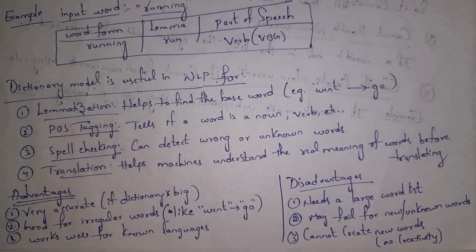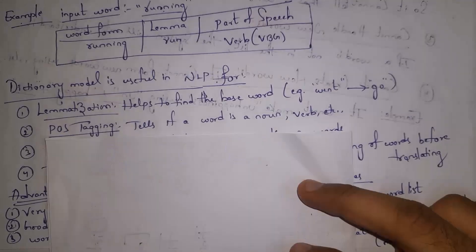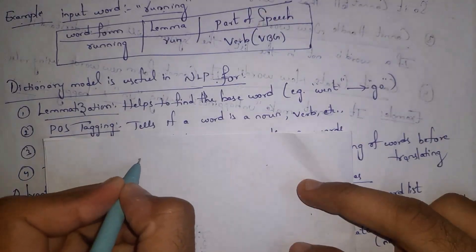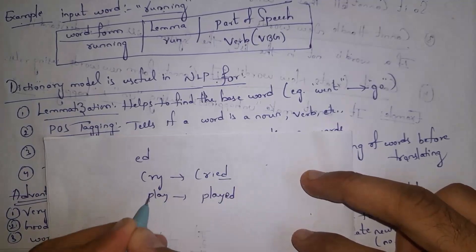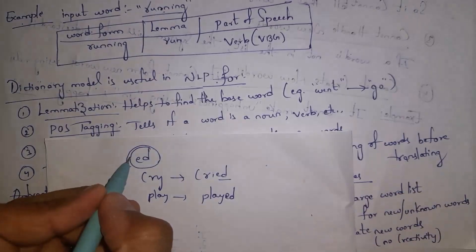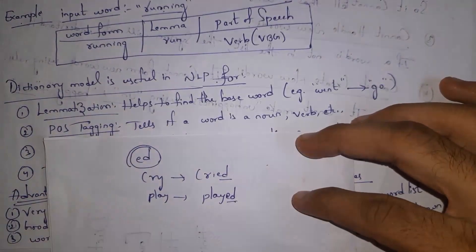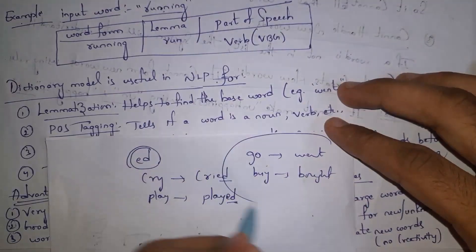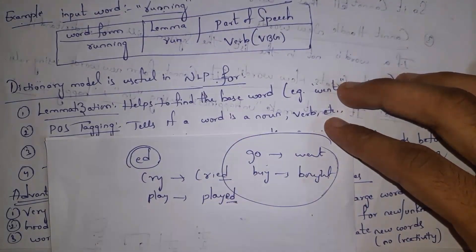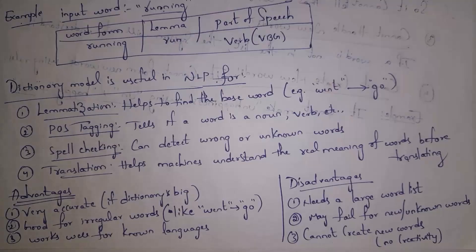The advantages of the dictionary-based morphological model are: first, it is very accurate because the dictionary is very large; second, it is good for irregular words. In regular past tense, words end with 'ed' — for example, 'cry' becomes 'cried', 'play' becomes 'played'. But for irregular forms like 'go' whose past tense is 'went', or 'buy' whose past tense is 'bought', a dictionary contains the correct forms. So this model works well for known languages like English, Hindi, Telugu, etc.